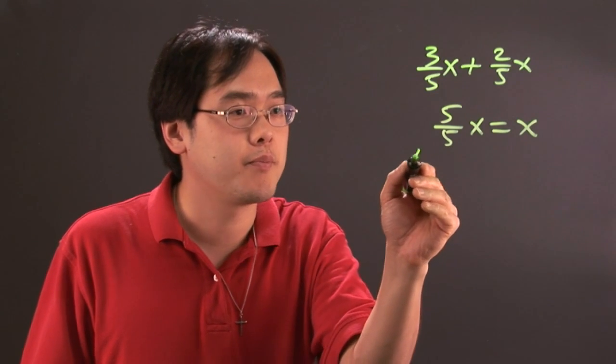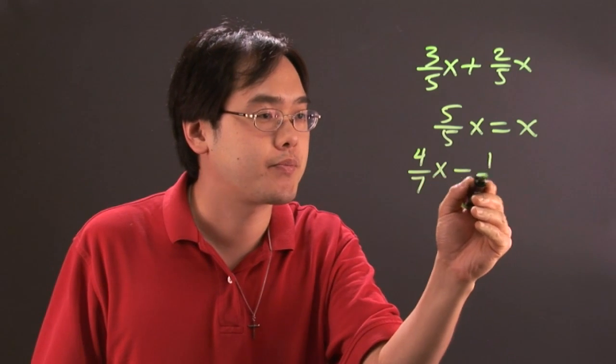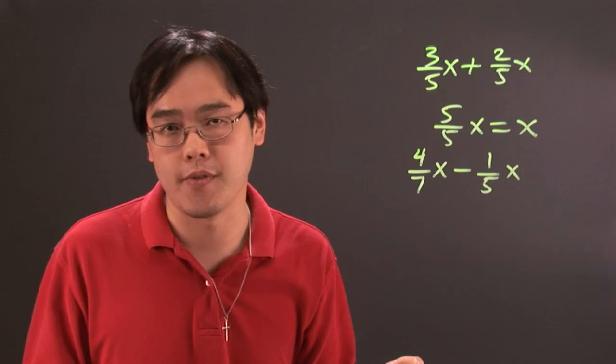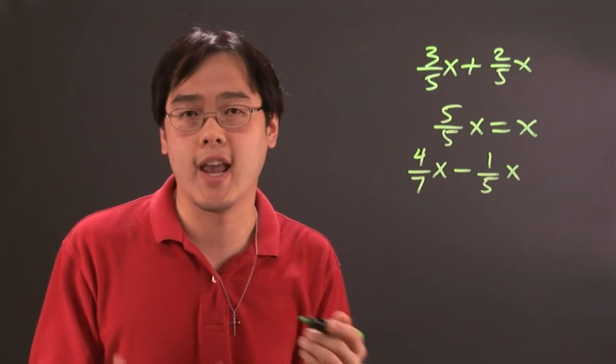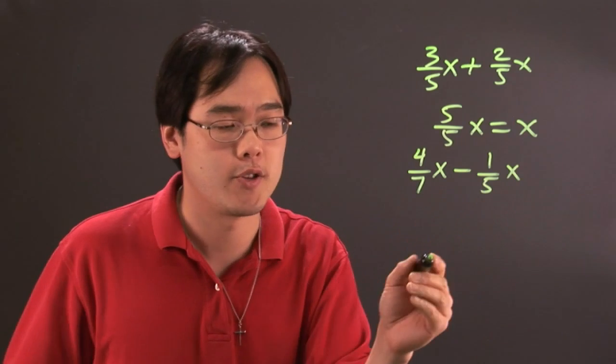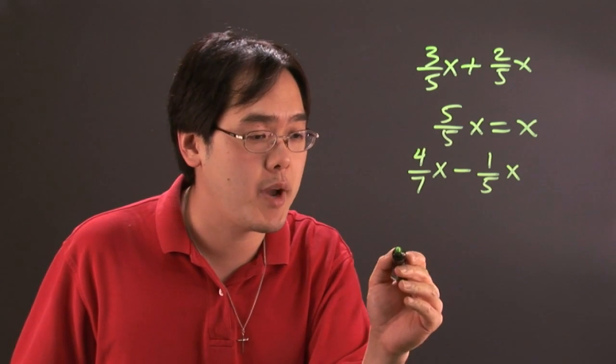But if you have something like 4/7x - 1/5x, that's where the least common denominator becomes very important because otherwise you can't really combine them. They've got the same base x, but the denominators don't match. So doing it kind of quick here, the least common denominator is 35.